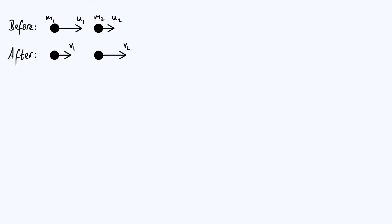I've got a diagram of the situation we're analyzing at the top left here, which may be self-explanatory. We've got two particles with masses m1 and m2, initial velocities u1 and u2, and final velocities v1 and v2. I say a bit more about that in my previous video.